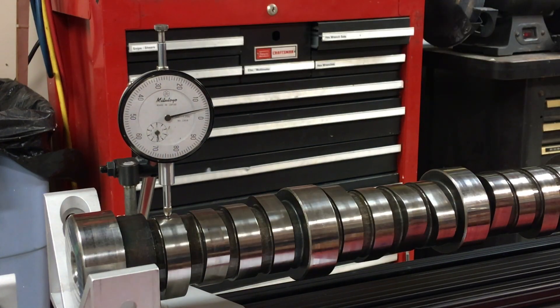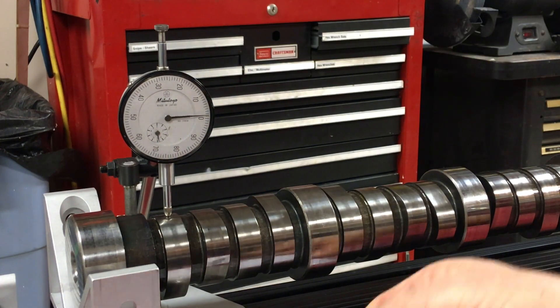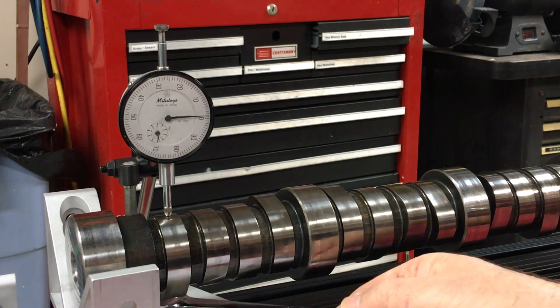So the base circles of intake and exhaust lobes are at a different height from the cam's centerline.